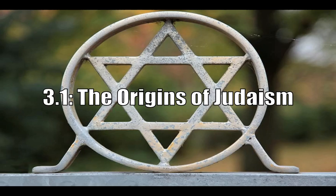Mr. Fino here. This is Unit 3, Lesson 1 on the Origins of Judaism. Here in the background, you might be wondering what this is — it is some kind of piece of metal art, but it is the Star of David, which is one of the most common symbols you'll see in the Jewish religion, or Judaism.